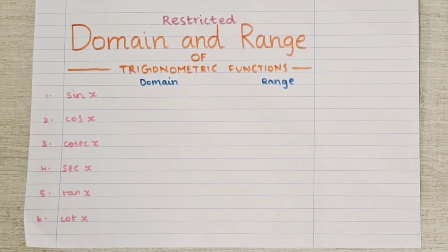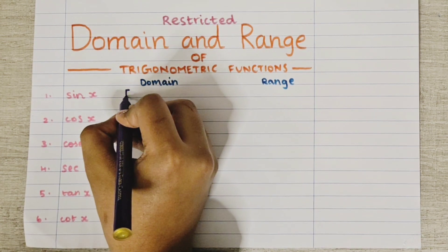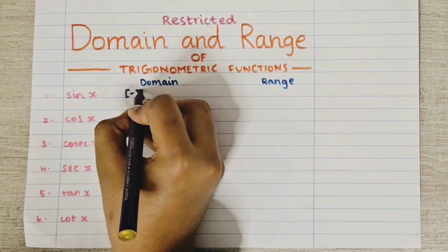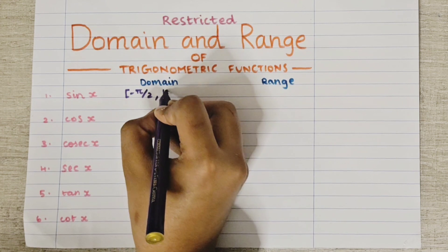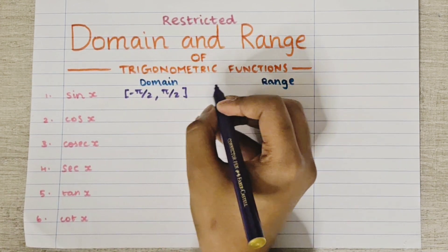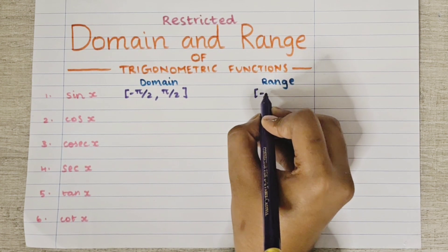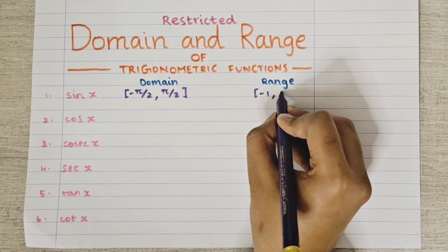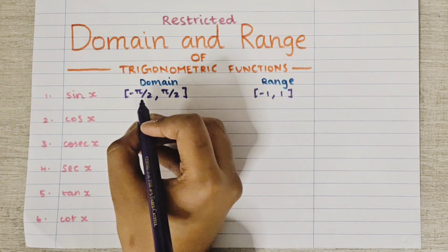We are going to see the restricted domain and range of trigonometric functions. There are six functions. For the first, sin x, the domain is the closed interval [-π/2, π/2] and the range is the closed interval [-1, 1].